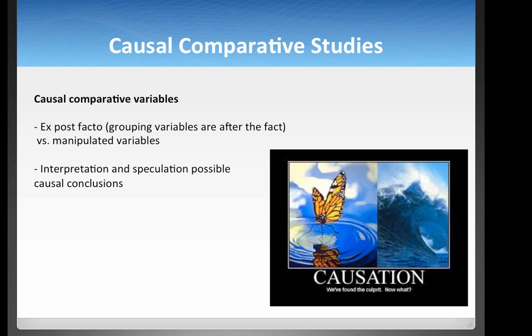For example, another way to think about it: if you think of gender, gender would be an ex post facto variable. You're born — it's not something an experimenter did to you.